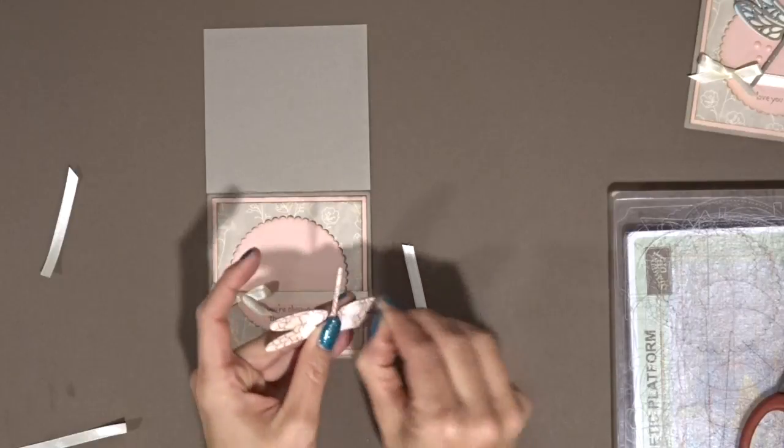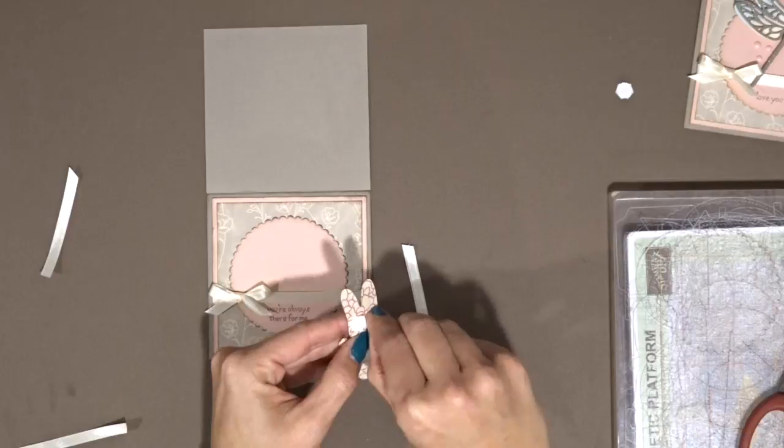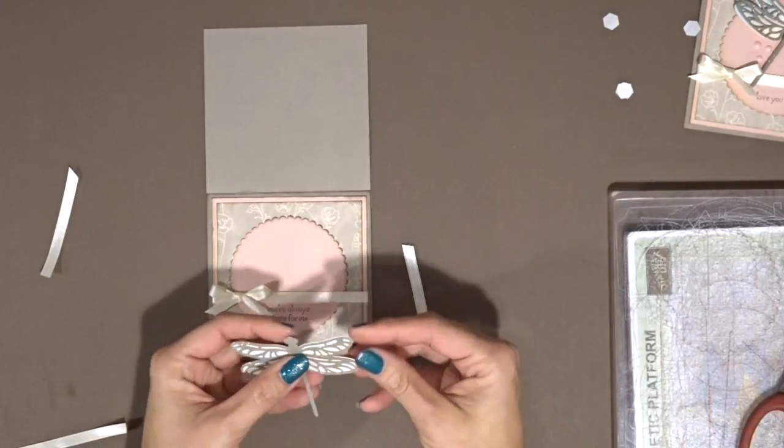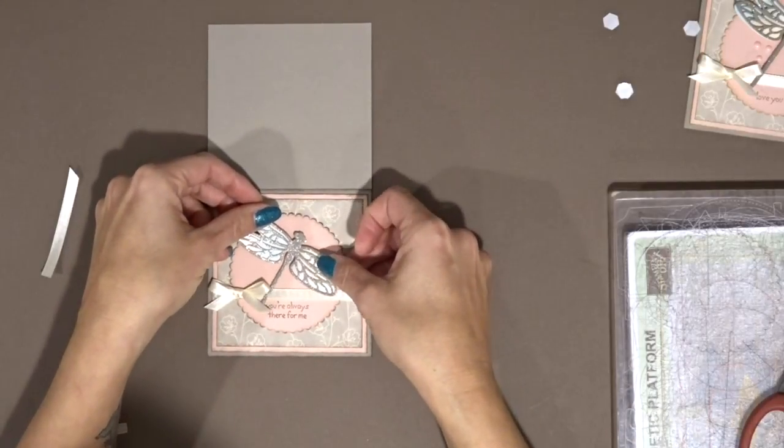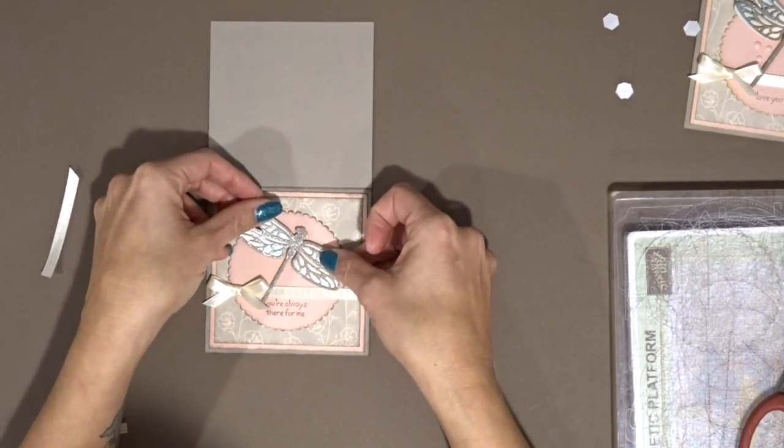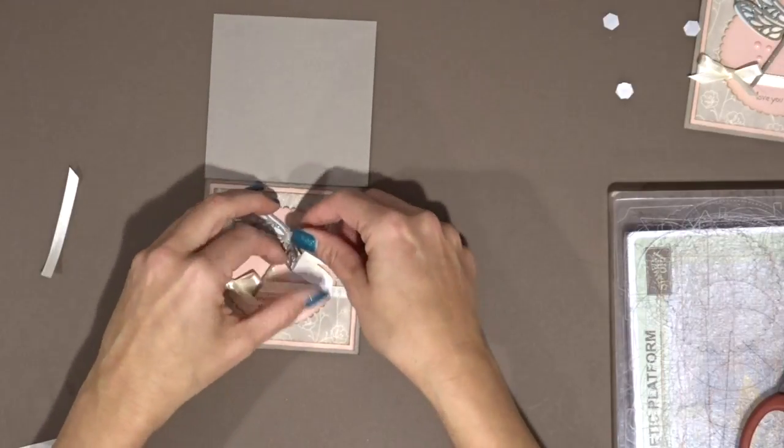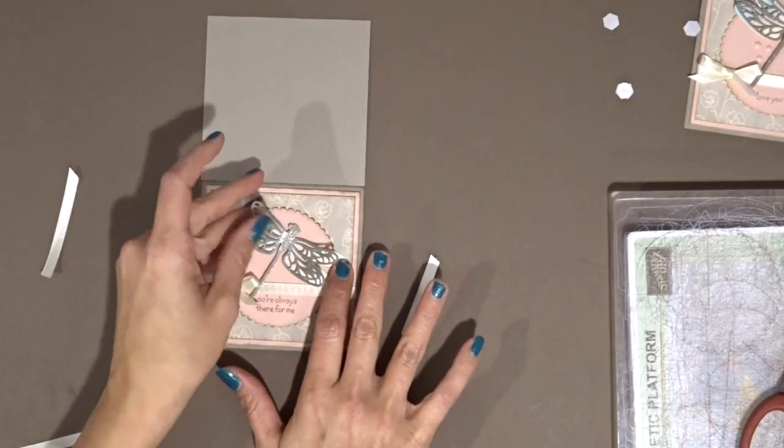And then we're going to take our dimensional elements off, well the paper off. Remember those things that get everywhere. And then we're just going to kind of place him and kind of have his tail coming down and over the ribbon like so. And then I'm just going to kind of bring his wings up just a little bit and they just curl kind of nicely.